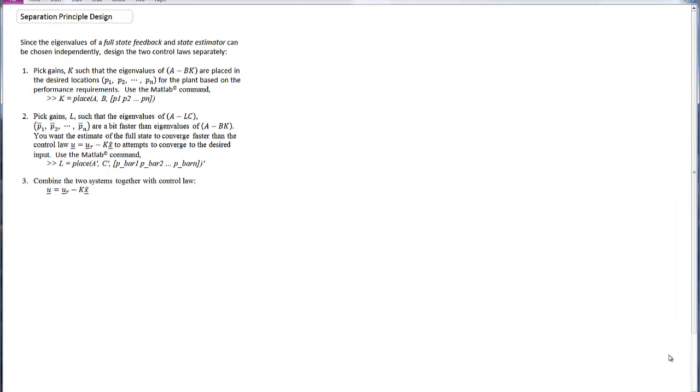In this mini-lecture, we're going to go over the separation principle design procedure and do an example. As we saw in class, since the eigenvalues of the full state feedback and state estimator can be chosen independently, we can design the two control laws separately and then put them together.